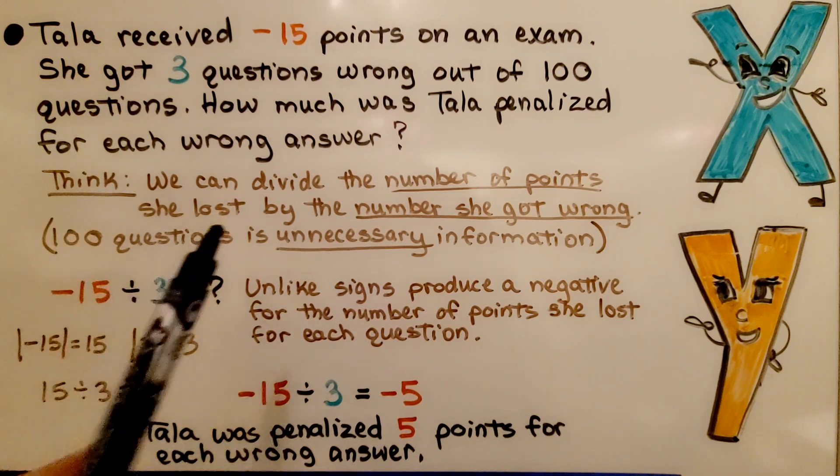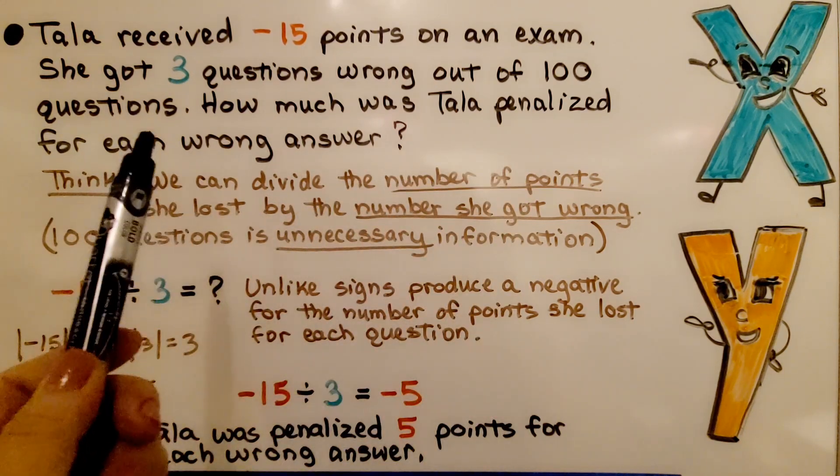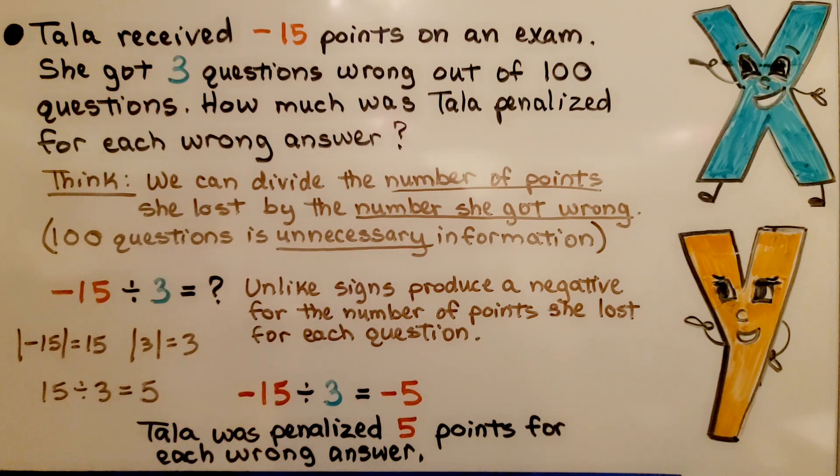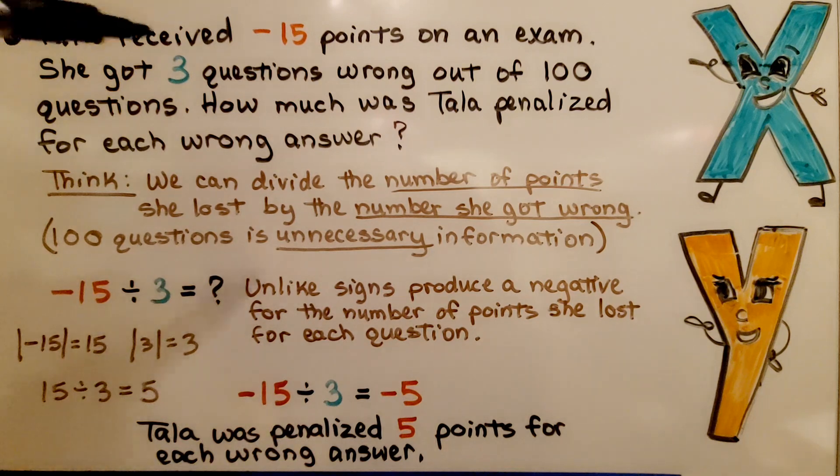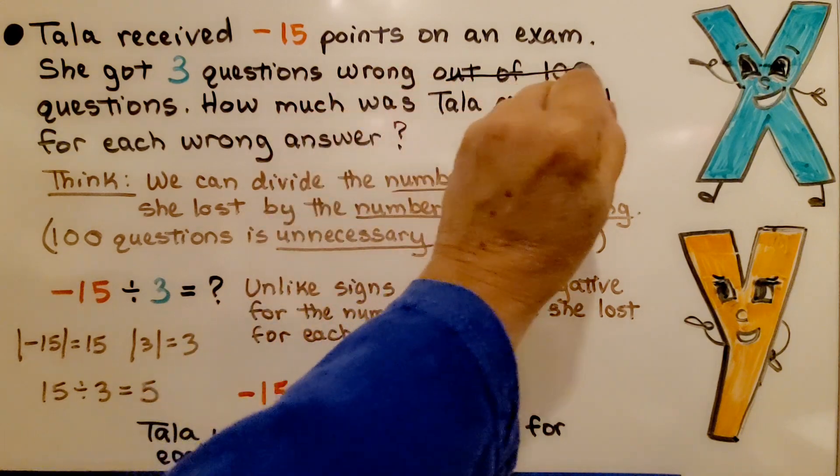We think we can divide the number of points she lost by the number she got wrong. And if you look here it says out of 100 questions. That 100 questions is unnecessary information. We don't need that. All we need to know is how many points she lost and how many questions she got wrong. This is completely unimportant.